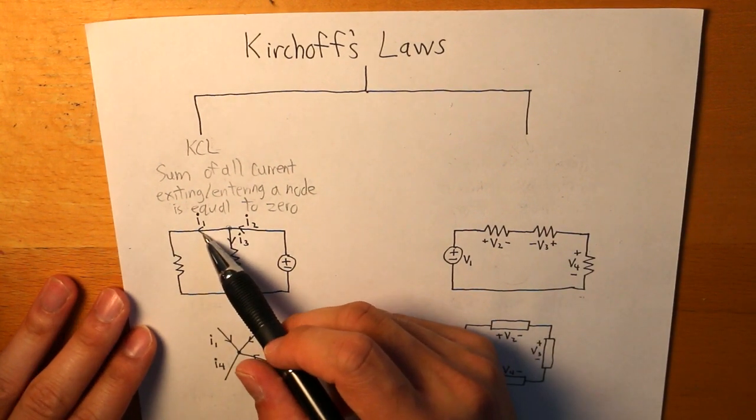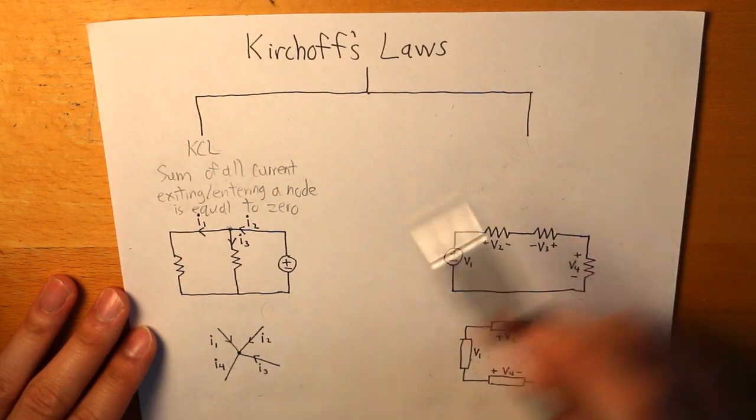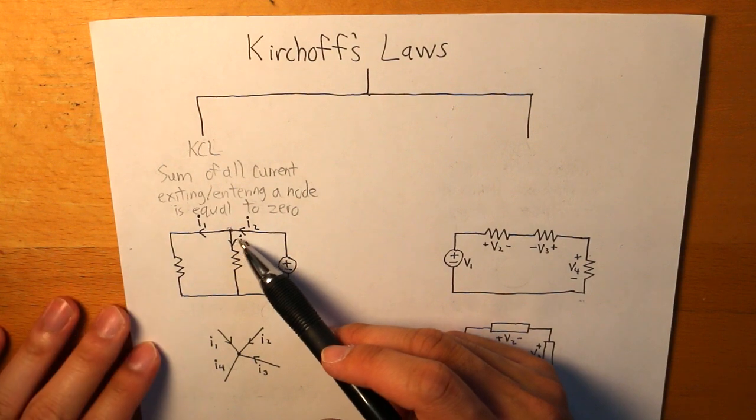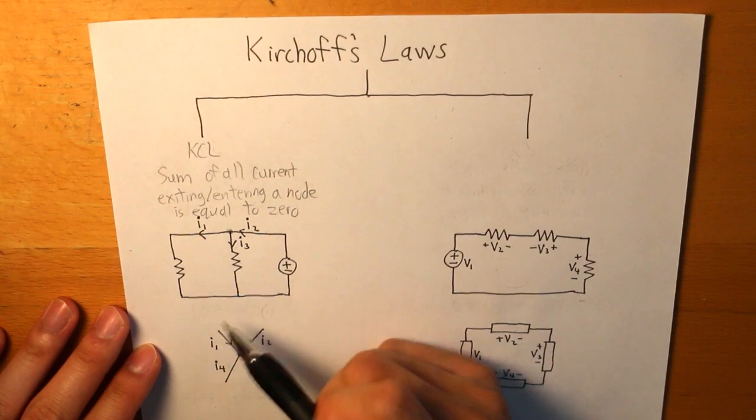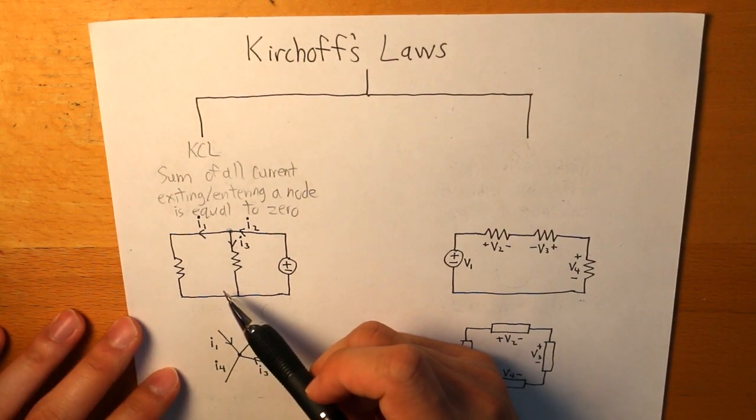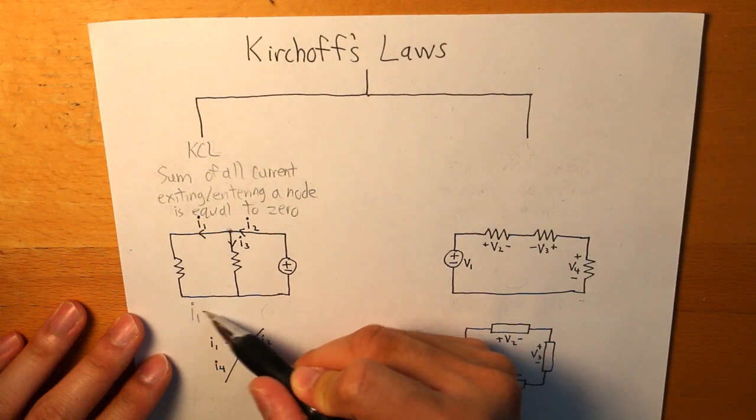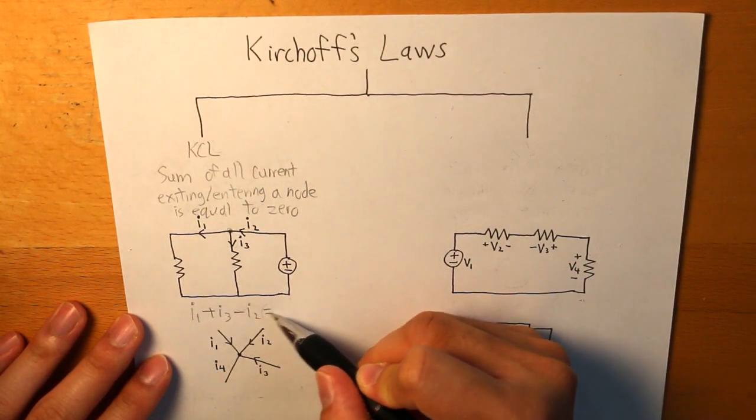So I1 and I3 are exiting that node and we can assume that would be considered positive, and I2, which is entering that node, would be the opposite effect which is negative, and we could represent that as a KCL equation. So we have I1 plus I3 minus I2, and that would equal to zero.